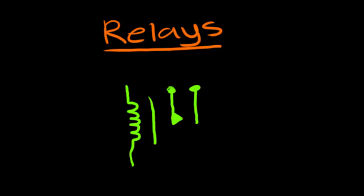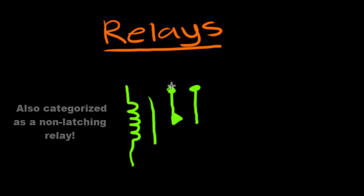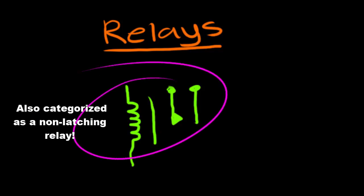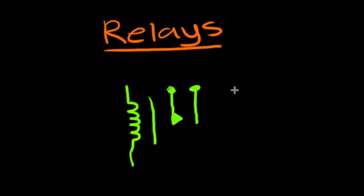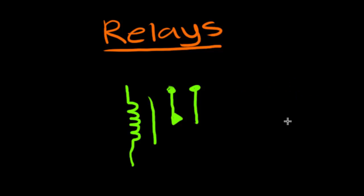There are many different types of relays, so let's first talk about the most basic form: the single pole single throw relay, which I have the schematic symbol for right here. That name sounds very familiar to a single pole single throw switch, and if we remember, that schematic symbol looked just like this — it's either a switch that's open or closed. A single pole single throw relay does almost the same thing.